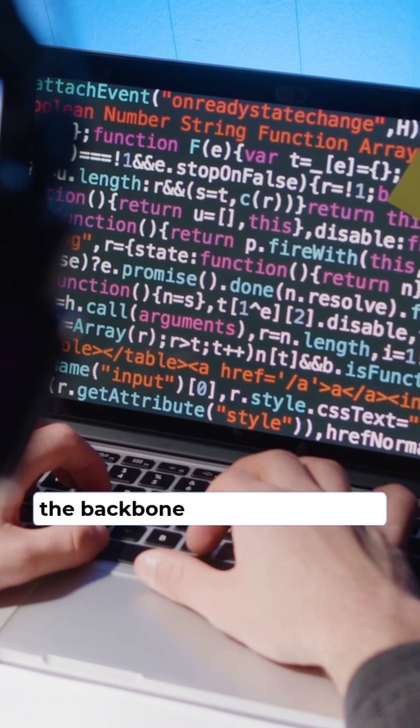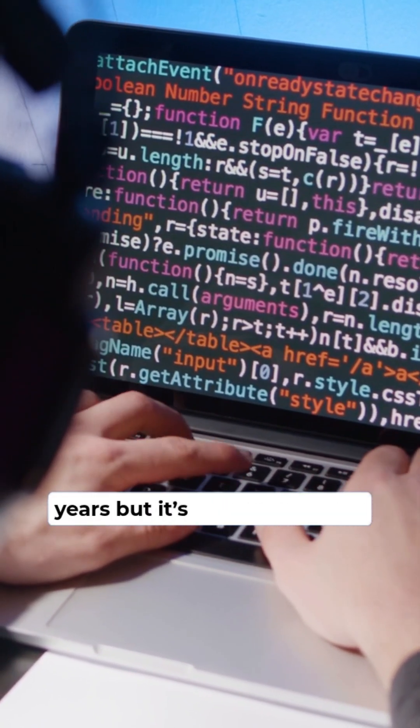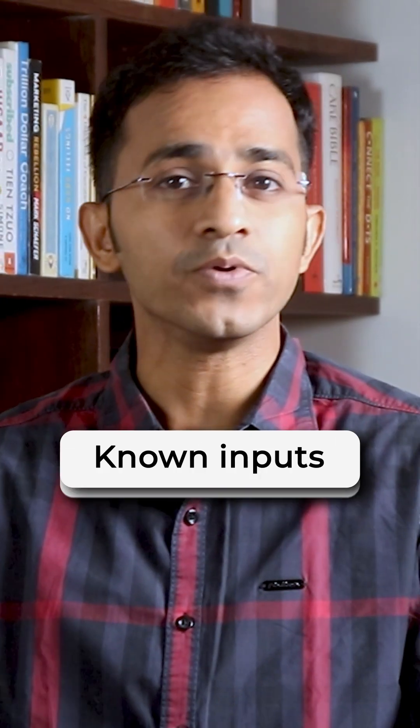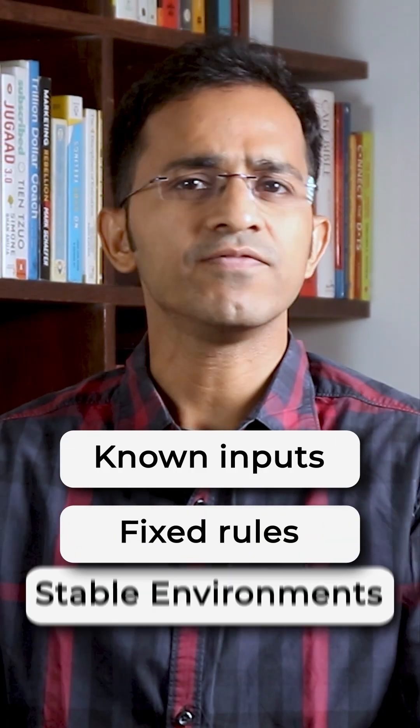Traditional software has been the backbone of automation for years, but it is starting to show its limitations. It's built for known inputs, fixed rules, and stable environments.